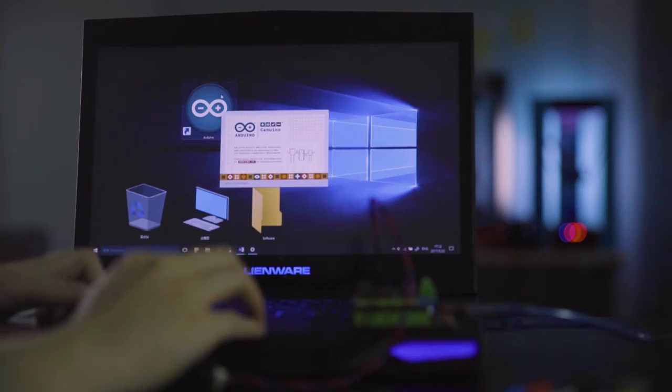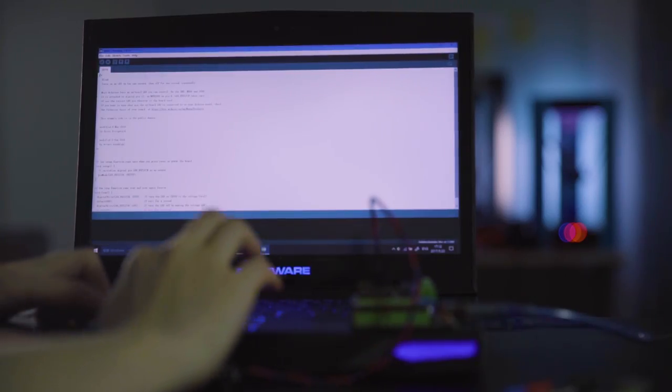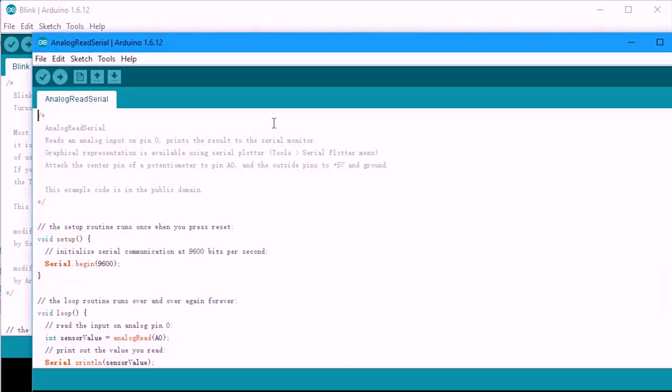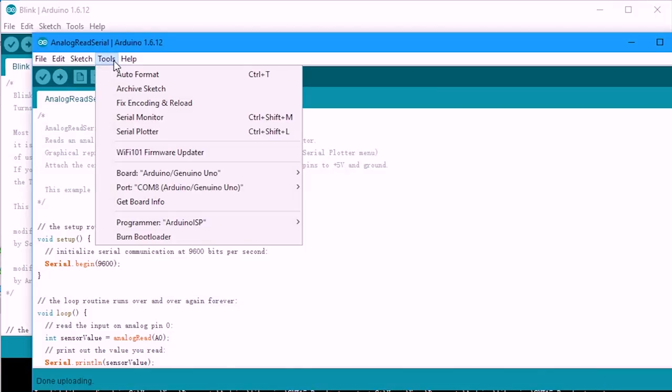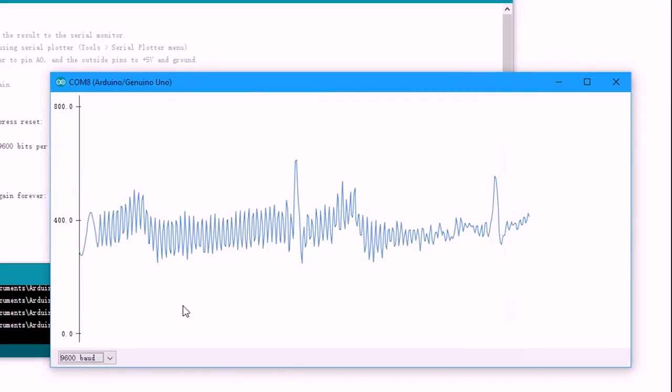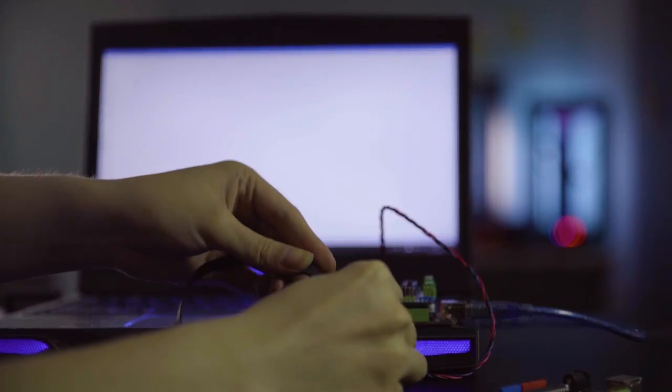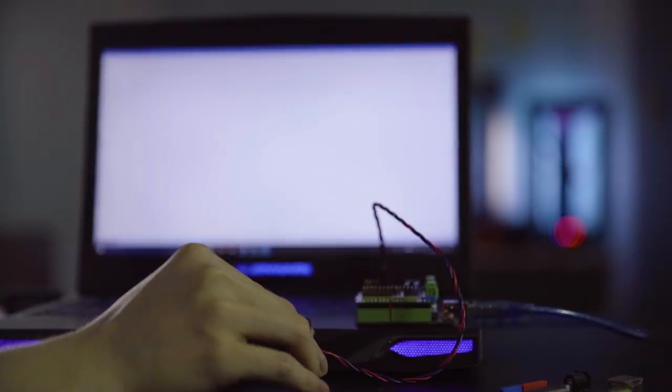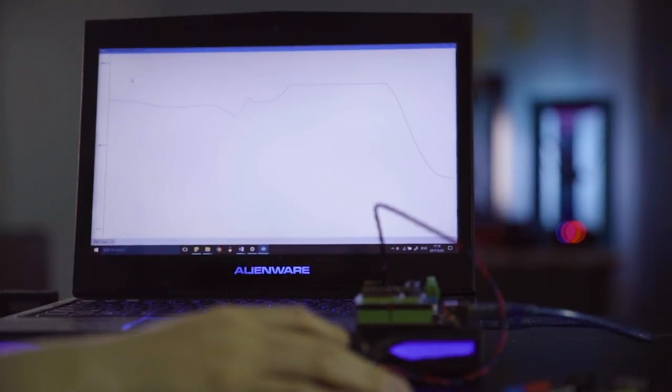Open the IDE, select the right board type and COM port, then go to Example, Analog, and open AnalogInOutSerial. Upload the code to the Arduino board. Once successfully uploaded, open the serial plotter. We will be able to see some random readings. Now put the sensor onto your finger or attach it to your skin, hold still, and wait for a few seconds. The heartbeat will be shown in the monitor.